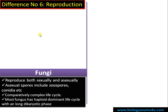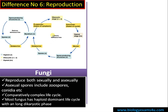Difference number six regards reproduction. In fungi, reproduction can be both sexual and asexual. Asexual reproduction occurs mainly by means of spores and conidia. Fungi have a comparatively complex life cycle — most fungi have a haploid-dominant life cycle with a long dikaryotic phase, where a cell contains two nuclei of different strains that exist without fusion. This dikaryotic phase can be prolonged, and the diploid stage is comparatively very short.